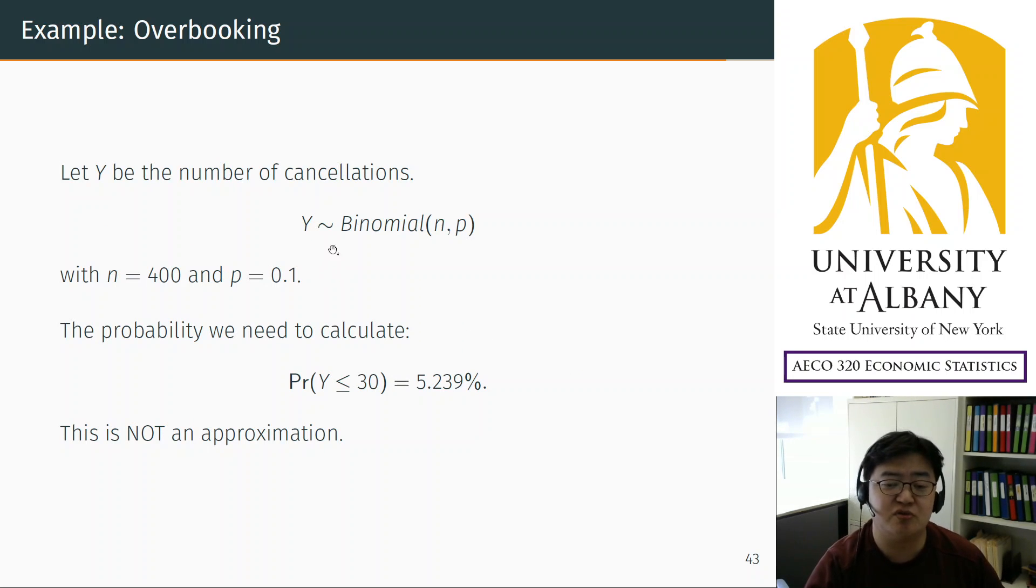So if you use binomial distribution, the parameters are 400 reservations. There are 400 reservations. Remember, Y is the number of cancellations. Number of cancellations can be at most 400. So the parameter is 400 and its probability is 10%. And I will not show you how to calculate this—computer can do this.